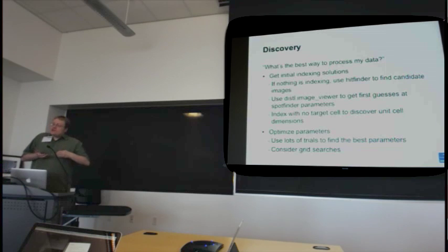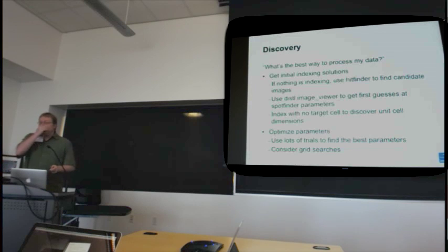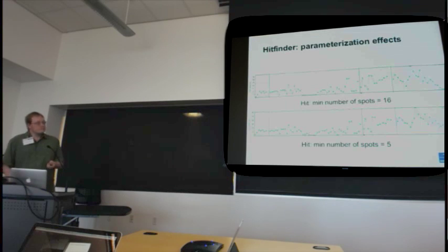Now you've gotten that far, and now you're going to enter this process of discovery where you're looking at your data and trying to figure out what is the best way to process it. What are the best set of parameters that I can use to get integrated signal? So starting from ground zero, you've got your, everything's calibrated, you know where the quadrants and tiles all should be, you know your detector distances, you have a good handle on the wavelength, and yet nothing is indexing. That's a problem. So we have ways to address that. Once you get a few indexing solutions, you can use software like dstl.imageviewer and cxi.index, which I'm going to go through and talk about to get your first initial guesses at spot-finding parameters. Once you get things starting to index, well then you can start optimizing your parameters using lots of trials to find the best parameters, and maybe even consider some grid searches for some of these parameters.